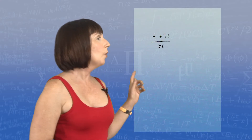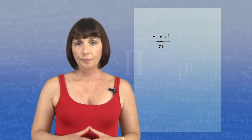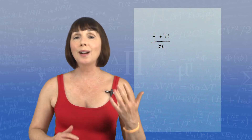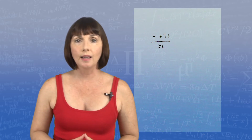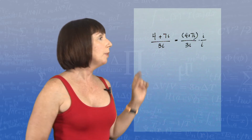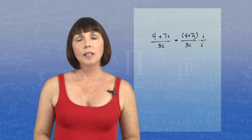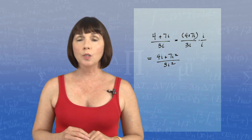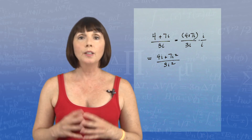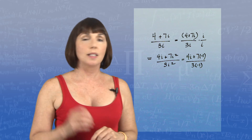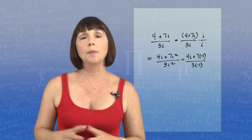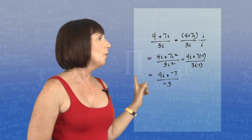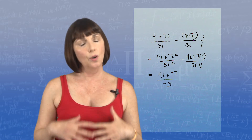Let's do another example. We have 4 plus 7i over 3i. Same thing here — we're going to get rid of that i in the denominator by multiplying the numerator and the denominator by i. So we get 4 plus 7i over 3i times i over i. Distributing through, we get 4i plus 7i squared, all over 3i squared. Then we get 4i plus 7 times negative 1 over 3 times negative 1, since i squared equals negative 1.